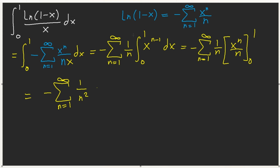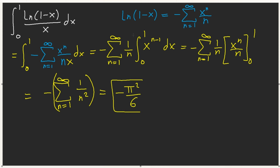And what this equals — this identity — is pi squared over 6. That's the famous Gauss sum. So the answer we have is negative pi squared over 6. This is our answer.